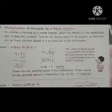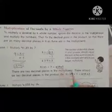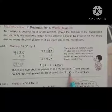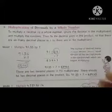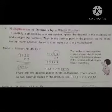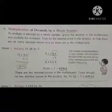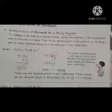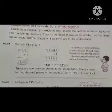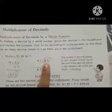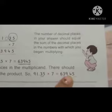Afterwards, we have to keep the decimal point in the product. The product is 63945. So 91.35 into 7 — after the decimal point two numbers are there, so two numbers before we have to keep the decimal point. First remove the decimal point, do the multiplication, then check and keep the decimal point. The decimal point — last two numbers before, we have to place the decimal point.